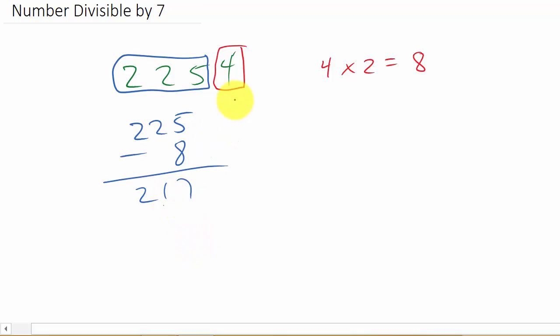Well, then what you can do is do this whole process again on this number. So we take the last digit and we double it, and then we subtract it, the 14, from the remaining digits.